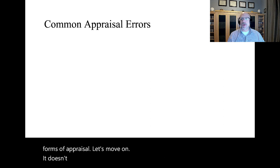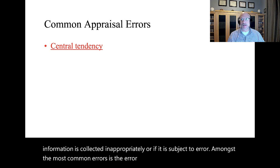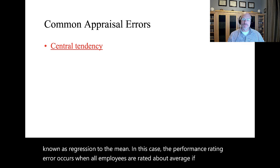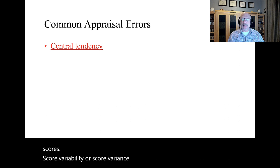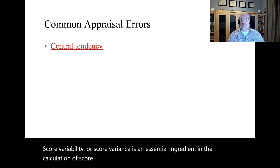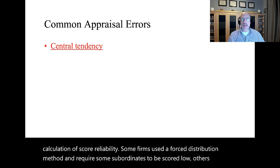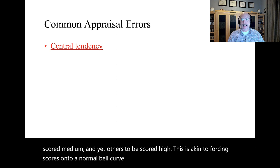It doesn't really matter what the source of the appraisal is if the information is collected inappropriately or if it is subject to error. Amongst the most common errors is the error of central tendency, also known as regression to the mean. In this case, the performance rating error occurs when all employees are rated about average. If no one is rated as low and no one is rated as high, there is no variability in the scores. Some firms use a forced distribution method and require some subordinates to be scored low, others medium, and yet others high — akin to forcing scores onto a normal bell curve.